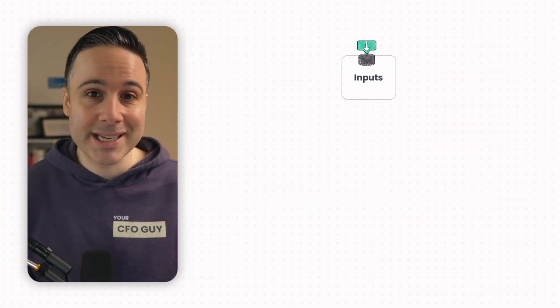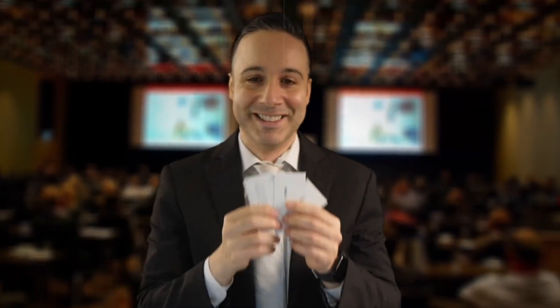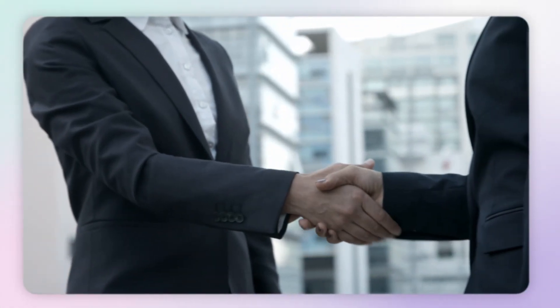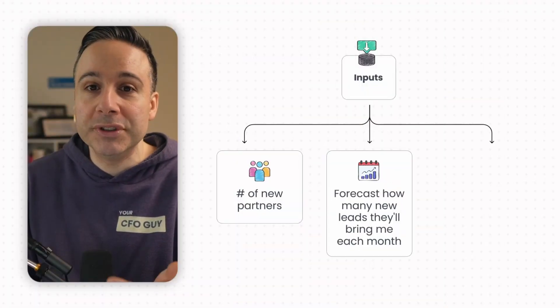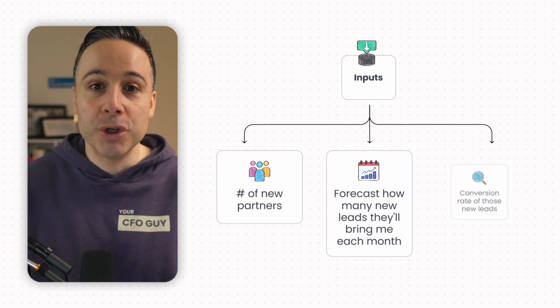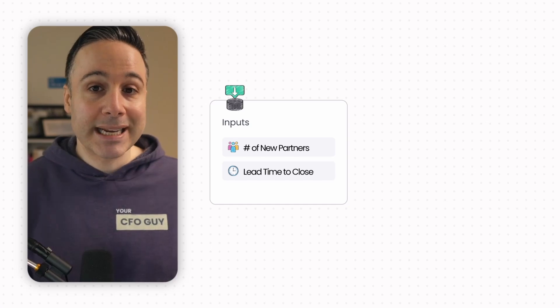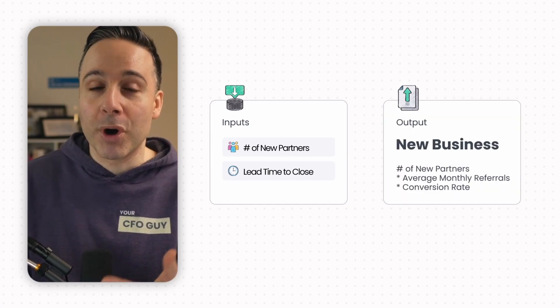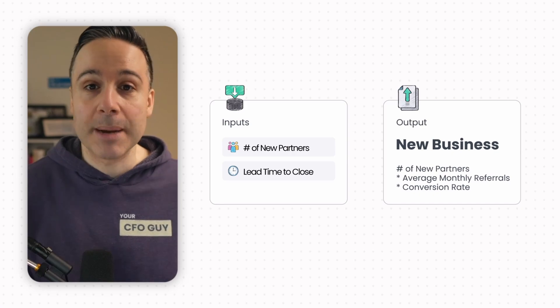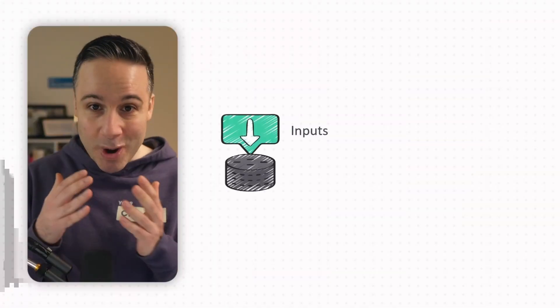For our accounting firm, we get a lot of our business from referrals. My input is the number of new partners. Now to get those new partners, there may not be an actual cost in terms of money, but it takes a long time to form those relationships — maybe going to a conference, cold calling them, or meeting with them via a warm intro from another client. But once I have this partner in my business, I can forecast how many new leads they'll bring me each month, and then the conversion rate of those new leads, which may be high since these leads trust this partner. To get to new business: number of new partners times average monthly referrals times the conversion rate. Do you see a pattern here? Inputs drive outputs.